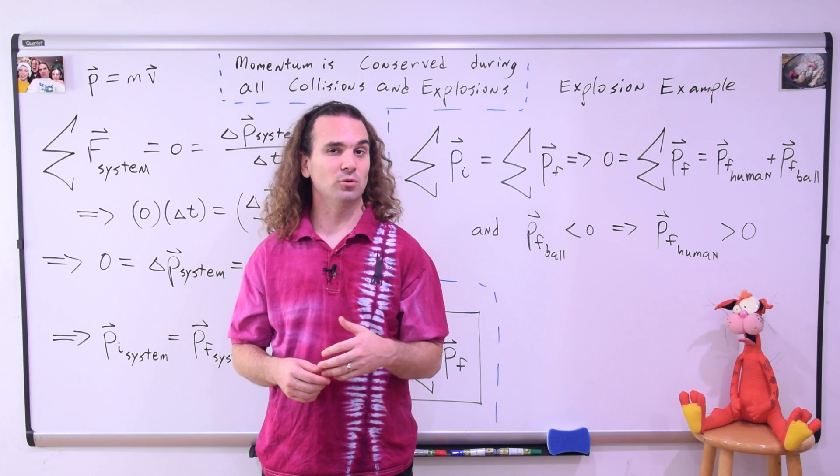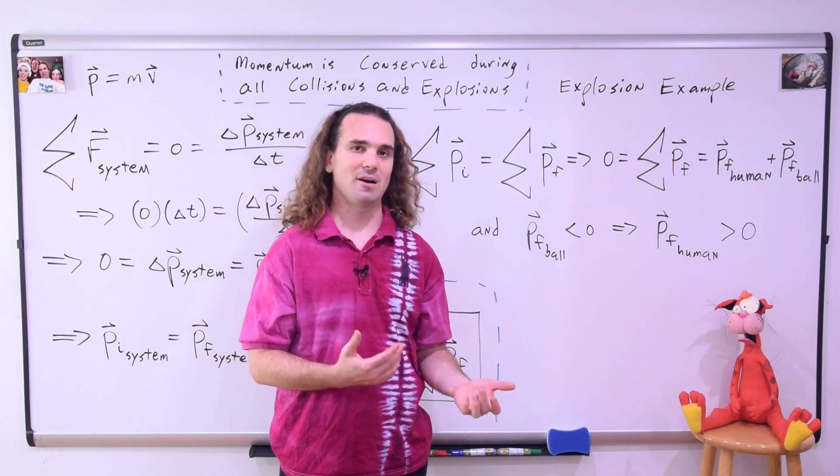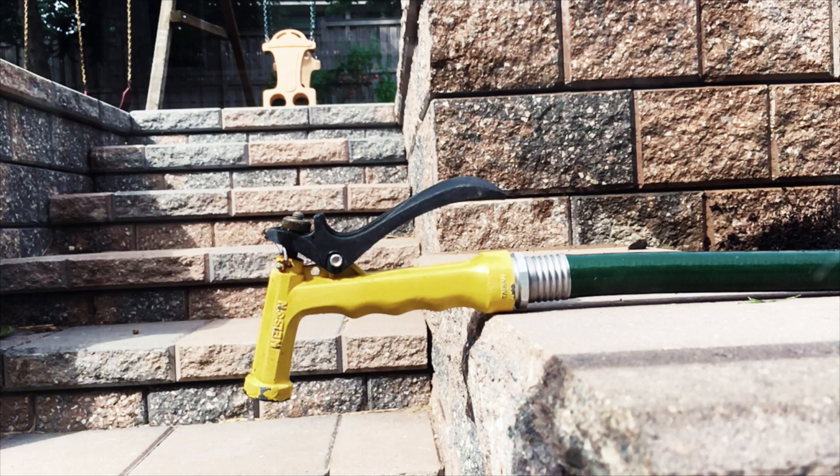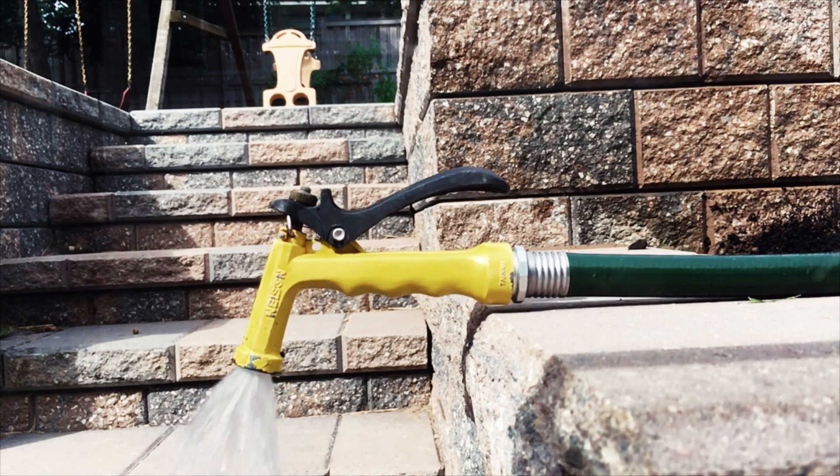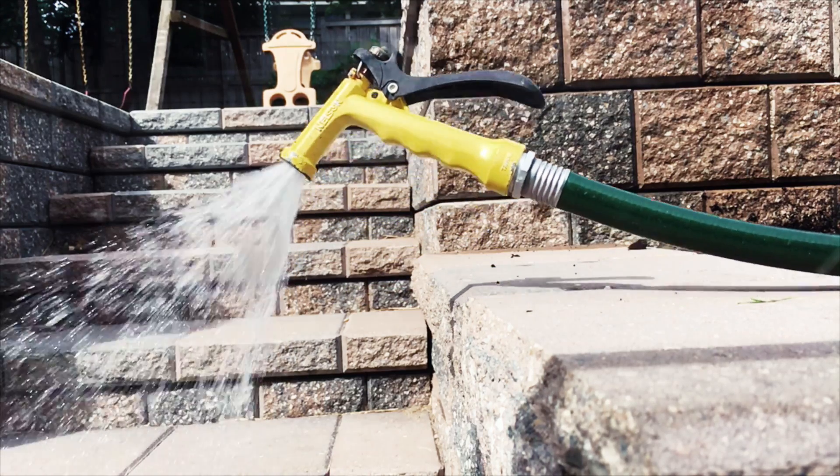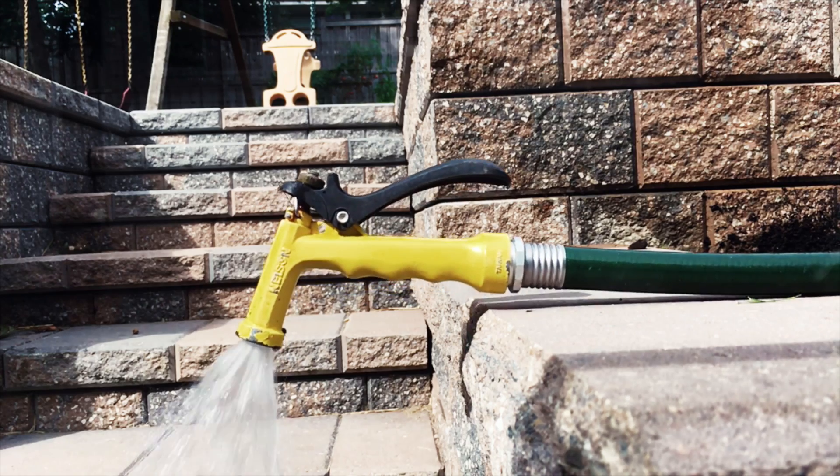In a rocket, the rocket fuel is ejected quickly downward, and therefore, the rocket moves upward. We can illustrate this using a hose spray nozzle. Again, the water is ejected quickly downward. This means the water has negative momentum. Therefore, because momentum is conserved, the spray nozzle gains positive momentum upward.